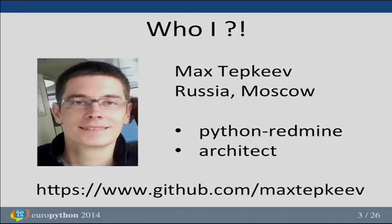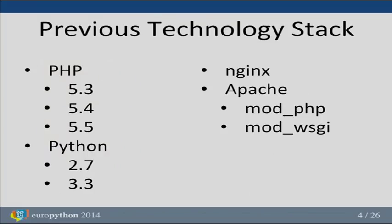When we just started, we used only PHP for developing our projects, with Nginx on the front end and Apache with mod_php on the back end, which was the best available way to host PHP applications at that time. But after several years, we realized there are a lot of problems and downsides with PHP itself, so we started searching for another language and chose Python.